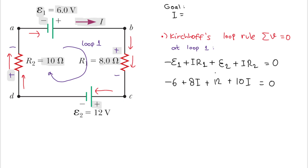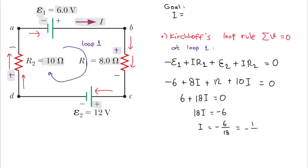Now let's do the math. Combining constants: minus 6 plus 12 equals 6. Combining i terms: 8i plus 10i equals 18i. So we have 6 plus 18i equals zero, which gives 18i equals minus 6, therefore i equals minus 6 divided by 18. Simplifying by dividing numerator and denominator by 6, we get i equals minus 1/3 ampere.